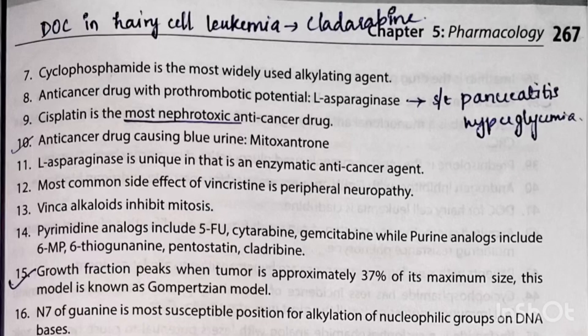Drug of choice in hairy cell leukemia is cladribine. Cyclophosphamide is the most widely used alkylating agent. The anti-cancer drug with prothrombotic potential is L-asparaginase; its side effects include pancreatitis and hyperglycemia. Cisplatin is the most nephrotoxic anti-cancer drug. The anti-cancer drug causing blue urine is mitoxantrone. L-asparaginase is unique in that it is an enzymatic anti-cancer agent.